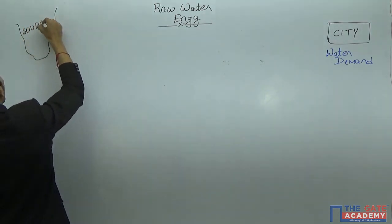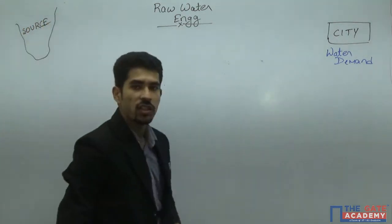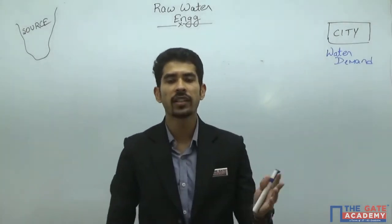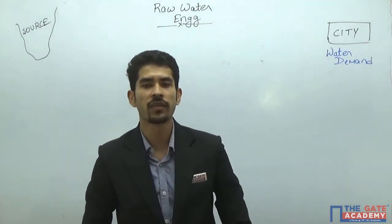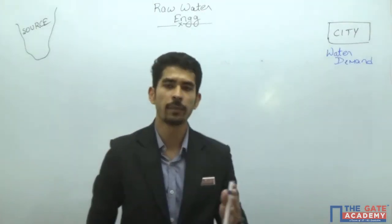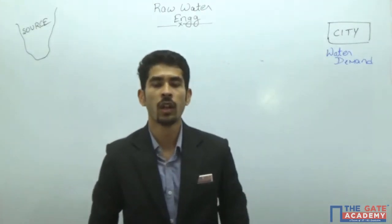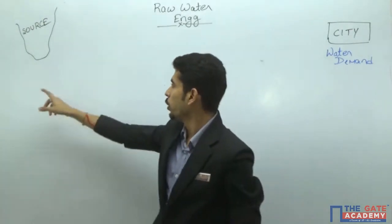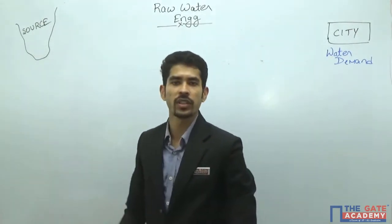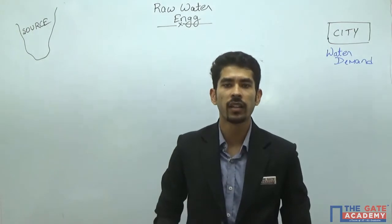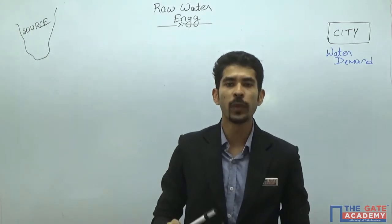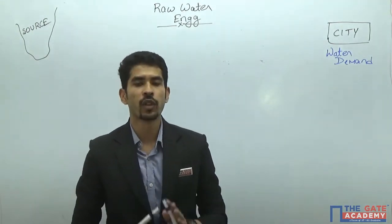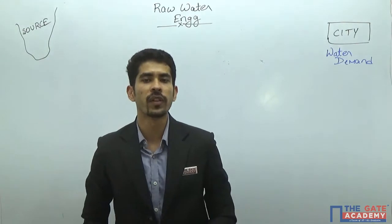There must be a source of water — it can be a surface source or a subsurface source; it can be river water or groundwater. I will take my source in such a manner that it should be able to supply water to this particular city for at least 50 years.